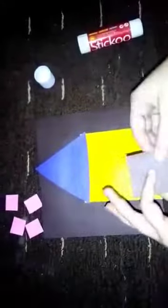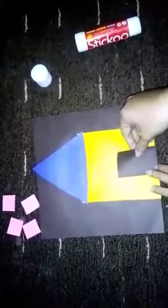We will take the rectangular one, the rectangular shape, apply some glue and paste it over here to make the house door, door of the house. Here is the door of the house. Can you see?